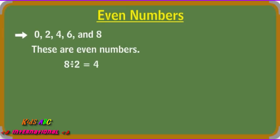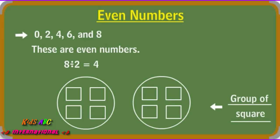Drawing pictures helps us better understand the concept. In this example, 8 squares can be put evenly into 2 groups. There are 4 squares in each group, and nothing is left over.